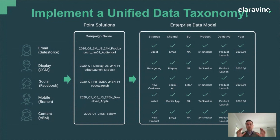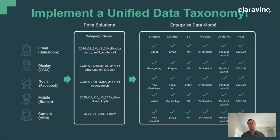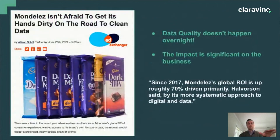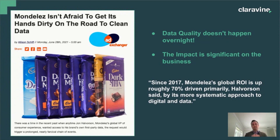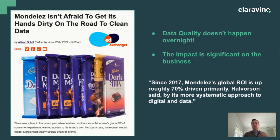Maybe start in the marketing org because there are so many digital touch points there, but chart this course to data quality by implementing a unified data taxonomy. Don't just take our word for it — there's a great article on AdExchanger from June of this year. Massive organizations like Mondelez have gone on this journey, and it doesn't happen overnight. This is a three-year process, but it has a monumental impact on your bottom line. In the case of Mondelez, ROI is up 70% since 2017. It's not just us at Clarivine saying this — CPG companies like Mondelez and their partners, in this case Mighty Hive Media.Monks, have proven it. Unify your taxonomy.